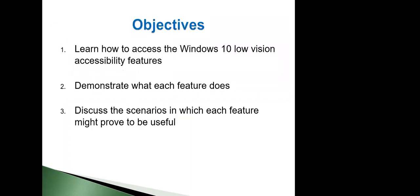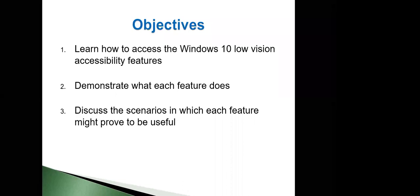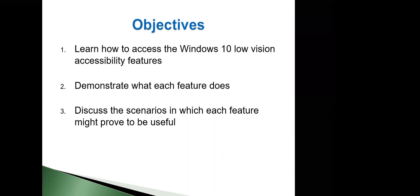Our objectives for today's webinar are going to be learning all about Windows 10 accessibility features for people with low vision. We're going to be learning how to access those features, demonstrating what each of the features does, and discussing the scenarios in which each of those features might be useful. Windows 10 really does have some quite good accessibility features for people with low vision now. I feel like they were behind for quite a while compared to Apple, but they've really improved that a lot recently. The accessibility features built into Windows 10 are now comparable to software that previously you might have had to pay for, like ZoomText, and obviously they're free because they're built into the operating system.